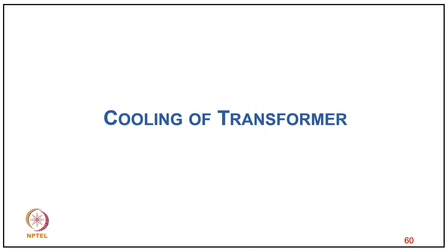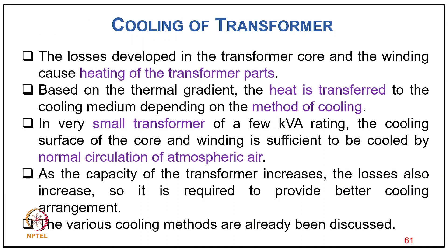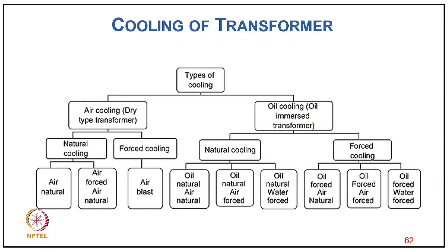Coming to the cooling of the transformer: losses developed in the transformer core and windings cause heating. Based on the thermal gradient, heat is transferred to the cooling medium. For very small transformers up to about 3 kVA rating, the cooling surface of the core and winding is sufficient for natural air circulation. As transformer capacity increases, the losses also increase, requiring better cooling arrangements.